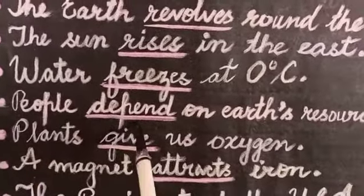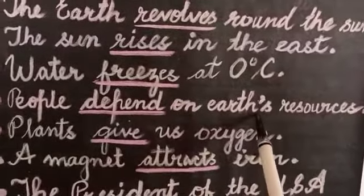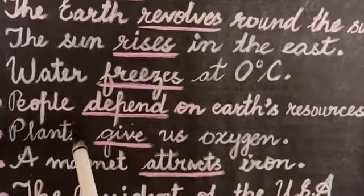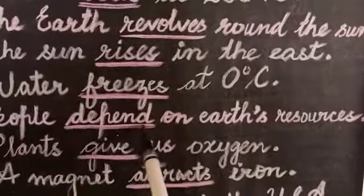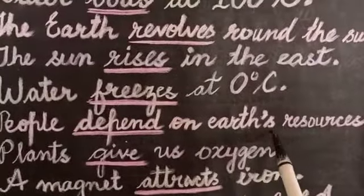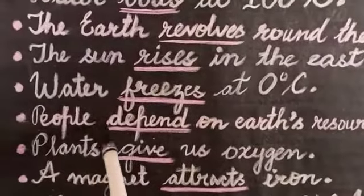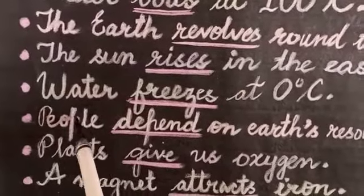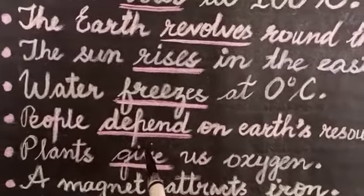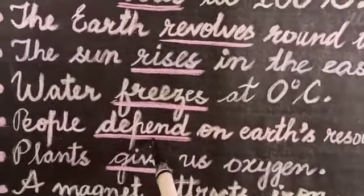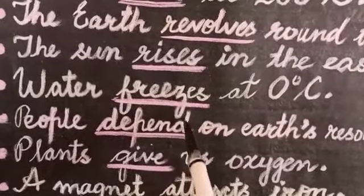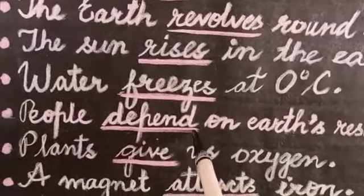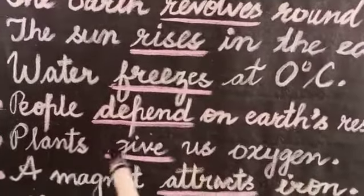People depend on earth's resources. It is also a fact that all humankind depends on earth's resources. 'People' means so many human beings, so it is a plural subject. We have used 'depend', which is a plural verb because we have not added -s, -es, or -ies to it.